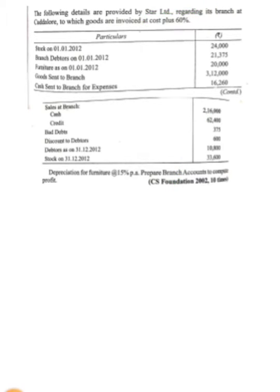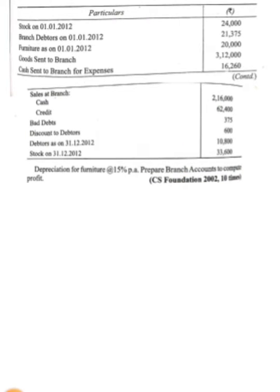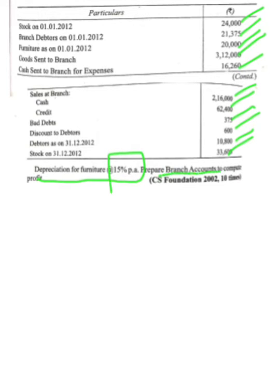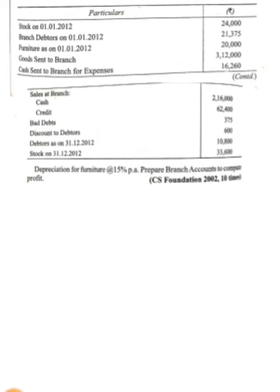The information related to this question includes: opening data — furniture, goods into branch, and cash sent to branch; expenses; sales — cash sales and credit sales; bad debts; discount; closing data; and closing stock. Additional information given: depreciation for furniture at 15% per annum. We have to prepare the branch account to compute the profit.